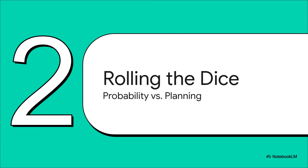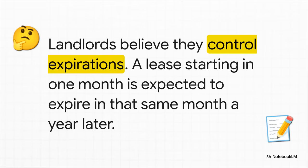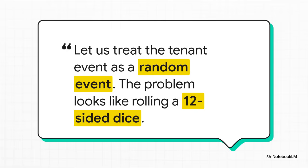Because the key to cracking this puzzle isn't about better scheduling. It's about understanding the raw power of probability. For years, the basic assumption has been that you, the landlord, are in the driver's seat. You sign a 12-month lease in January, and you confidently pencil in that expiration for next January. You build your whole portfolio strategy, your whole financial model, around this idea of predictable, controllable events. But that core assumption? It's fundamentally flawed. And this is such a powerful way to think about it. The second that lease is signed, the control shifts.